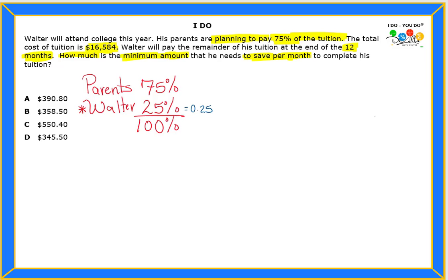Okay, so we are gonna multiply the tuition, which is 16,584, times the decimal from the percent that Walter will need to pay, which is 0.25.